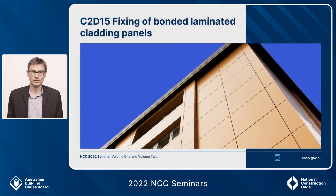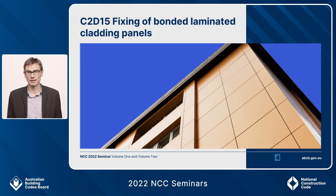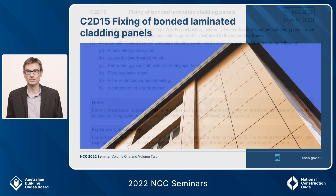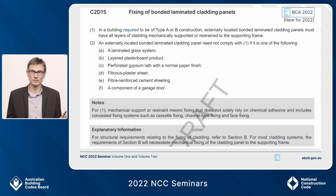The next change is a new provision: C2D15, fixing of bonded laminated cladding panels. This is not just about aluminium honeycomb panels — it applies to any cladding panel on a type A or type B building that is bonded and laminated. In a nutshell, this provision requires that fixing must be mechanical — for example, a cassette-style fixing. Tape or glue fixing alone is not allowed under C2D15. Adhesives can still be used in addition to mechanical fixing, but cannot be the sole fixing method, as mechanical fixing better prevents panels from detaching in a building fire.